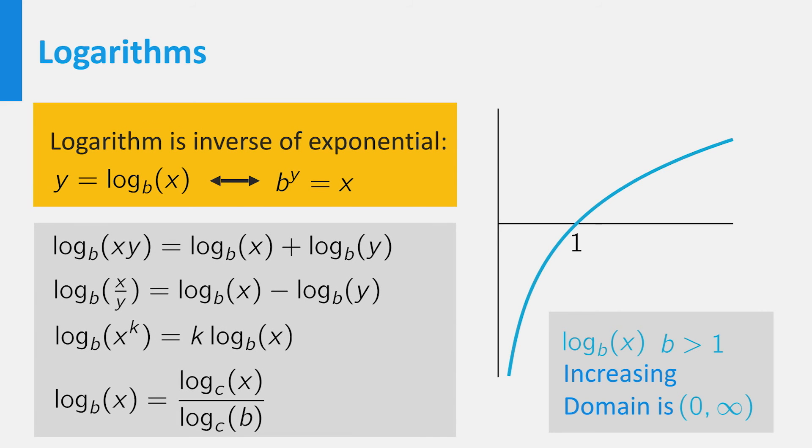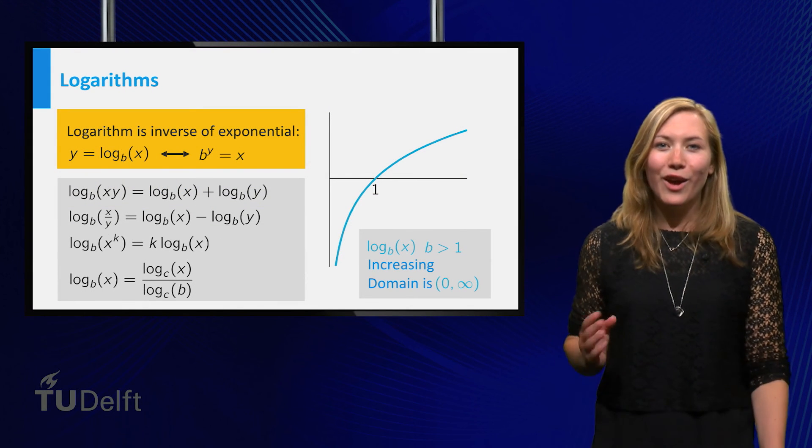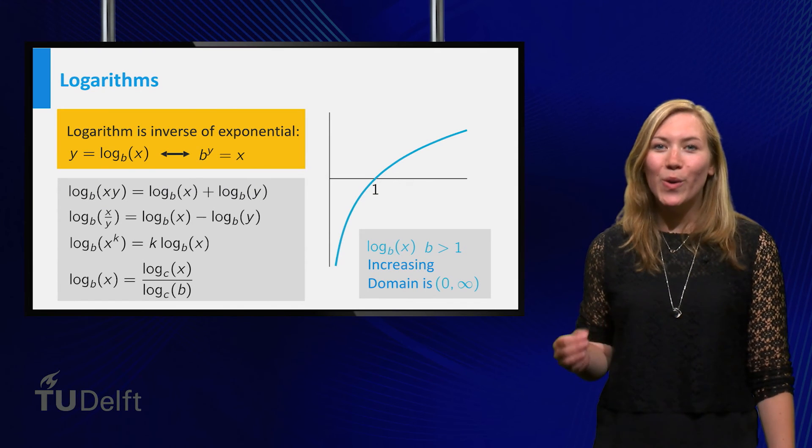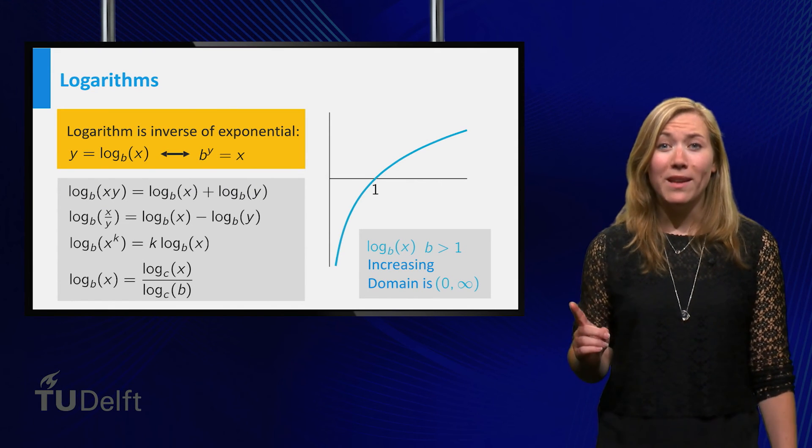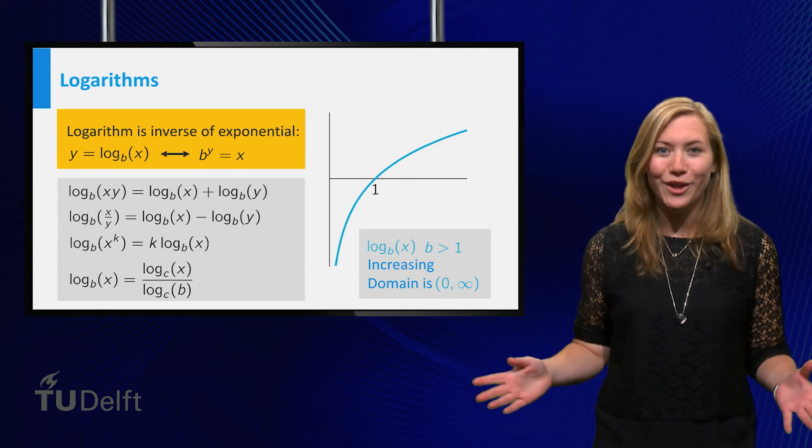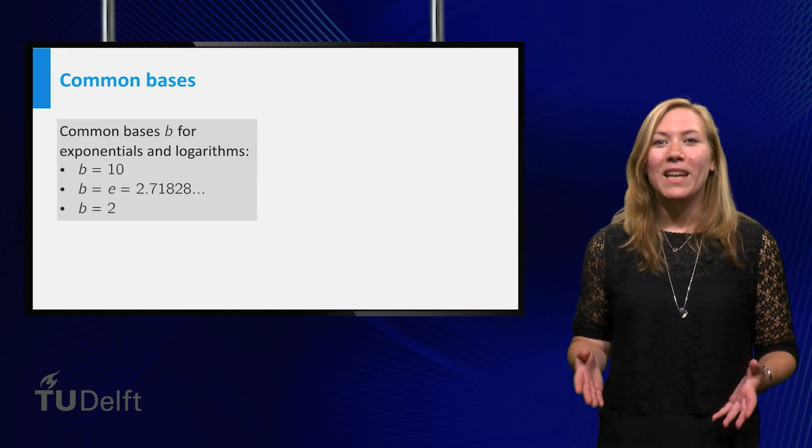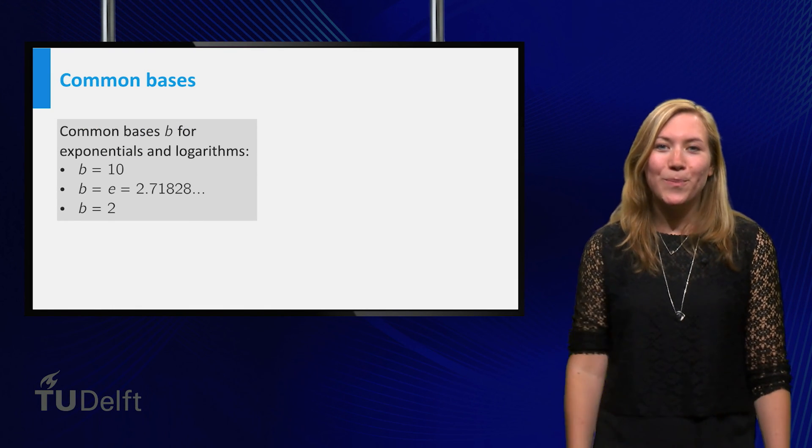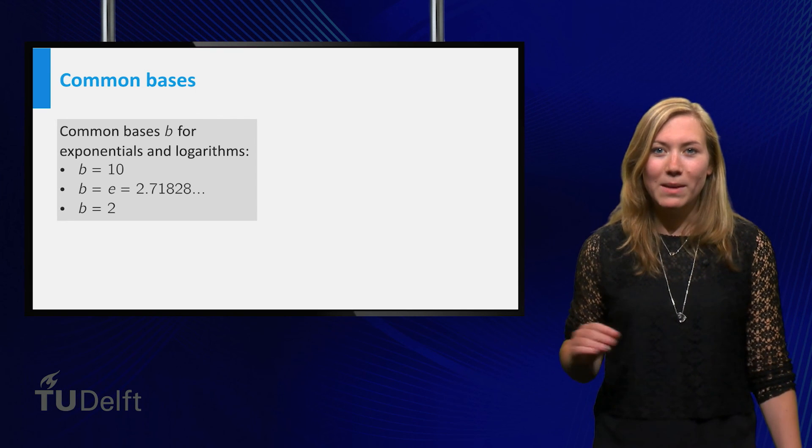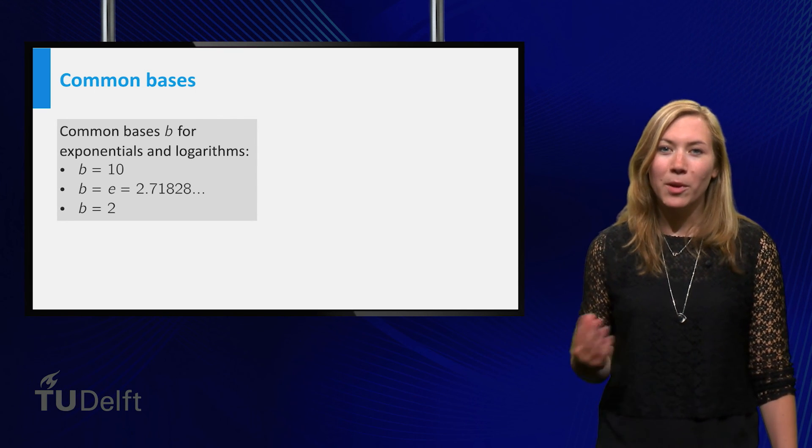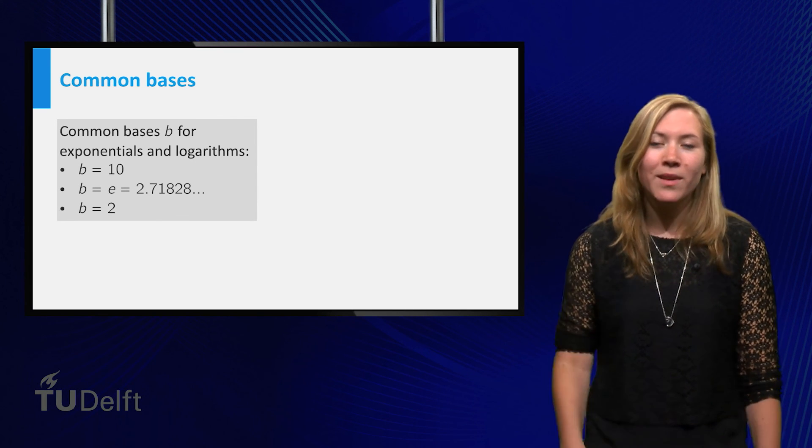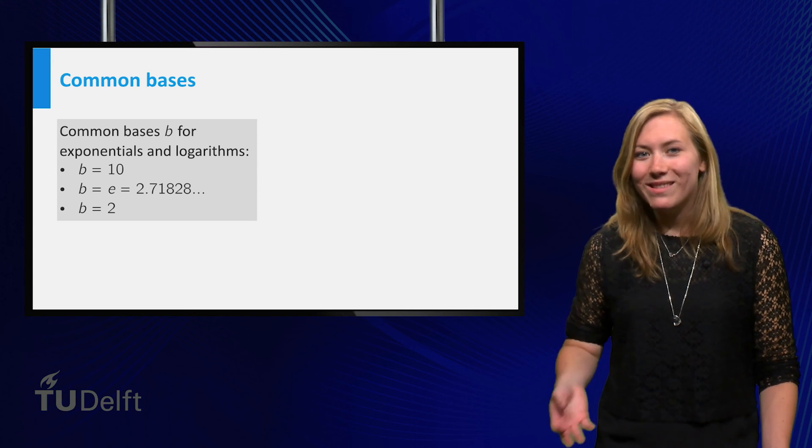The rules of calculation for exponential functions translate to the rules for the logarithm. The last formula shows that you only need logarithms in one base to calculate all others. Typically, only a few bases are used. If the base is not explicitly mentioned, it should be clear from the context what the base is. Often this means the base is 10.